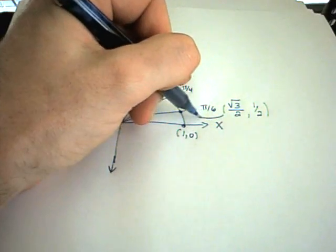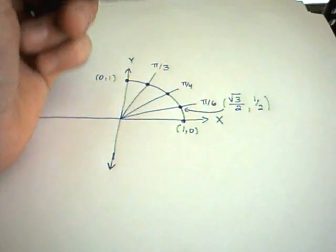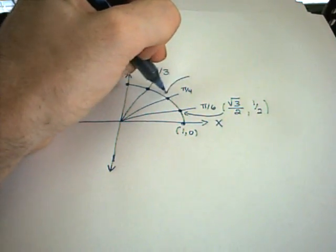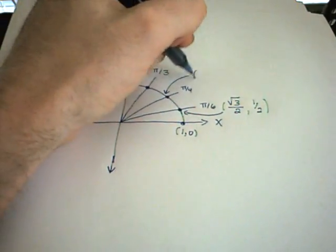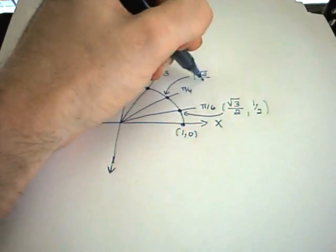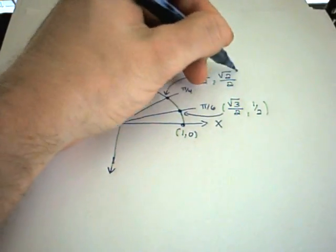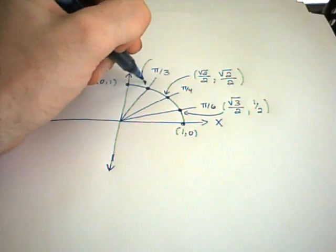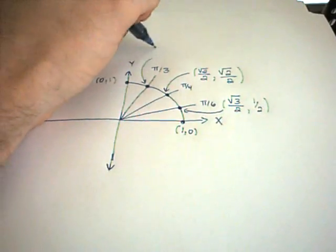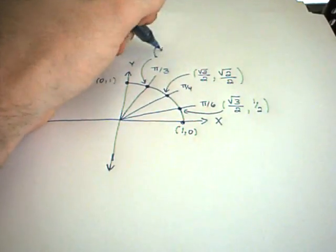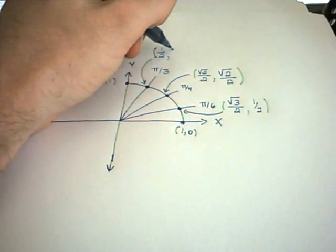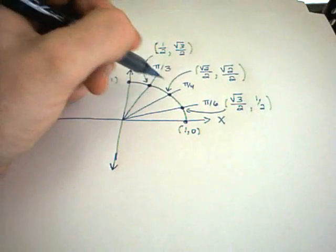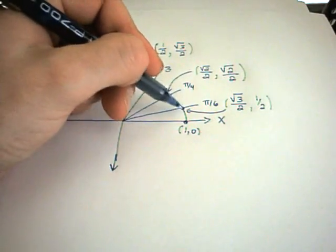That is this dot right here on the unit circle. At π over 4, it hits at the value square root of 2 over 2 comma square root of 2 over 2. And at π over 3, that's going to flip-flop the values at π over 6, touching the circle at 1 half comma square root of 3 over 2. These points represent the points on the circle.